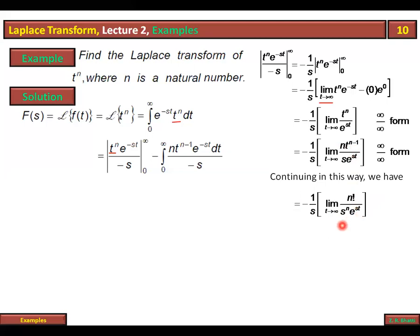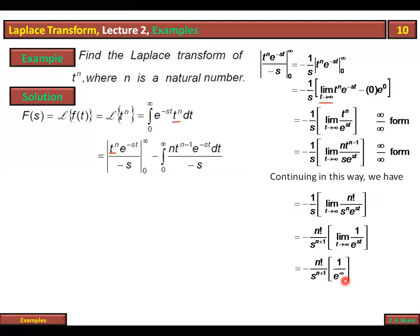After repeated application of L'Hôpital's rule, we get n! in the numerator. Then we have n! over e^(st). Now we cannot apply L'Hôpital's rule anymore because the numerator is a constant. We apply the limit: as t → ∞, e^(st) → ∞, so we get 1 over infinity, which is definitely zero. So this term is zero.